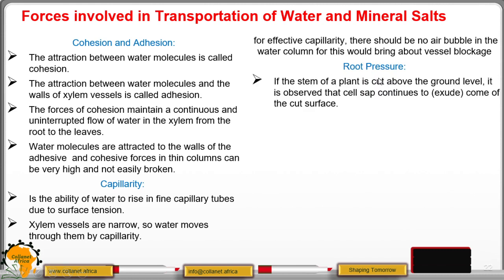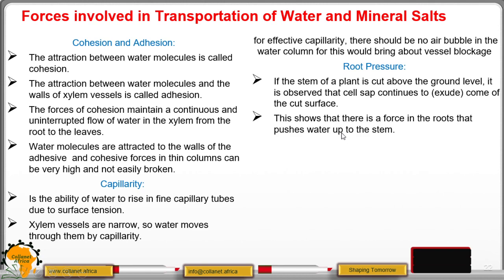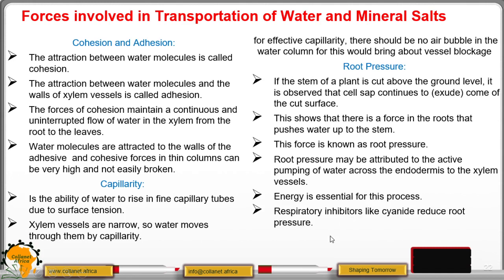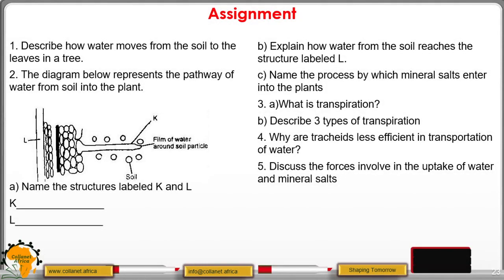The last force is root pressure. If the stem of a plant is cut above the ground level, the cell sap continues to exude from the cut surface. This means there is a force in the roots pushing water up the stem — that is root pressure. It can be attributed to the active pumping of water across the endodermis to the xylem vessels, and energy must be present for this process. If respiratory inhibitors like cyanide are present, they reduce root pressure.